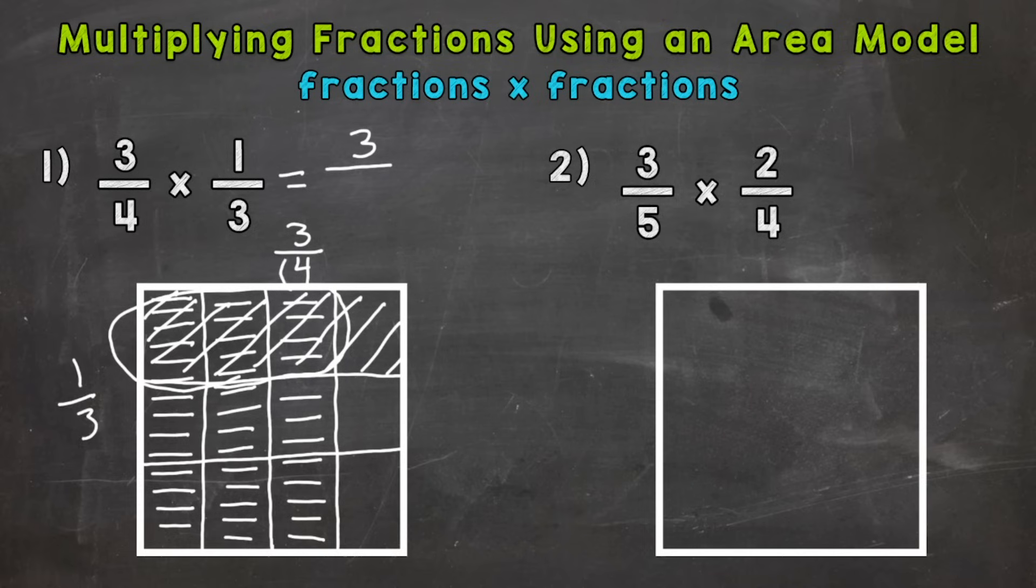The denominator is going to be how many total sections is in that big square. And we have a four by three, or a three by four, however you want to think of it. So you can do four times three, which is 12. That we have 12 total sections in our big square. Or if you counted them individually, you'd get 12.